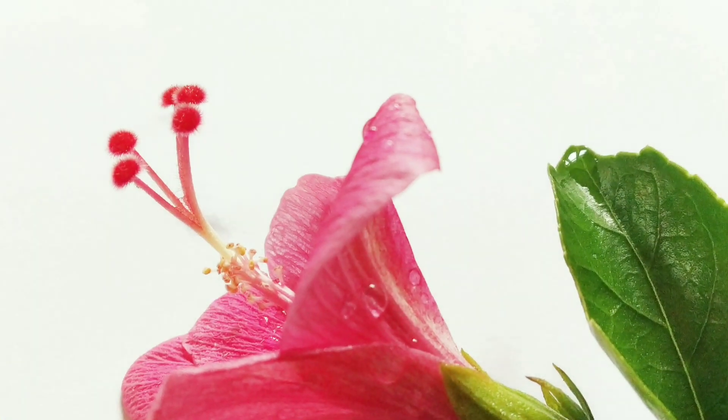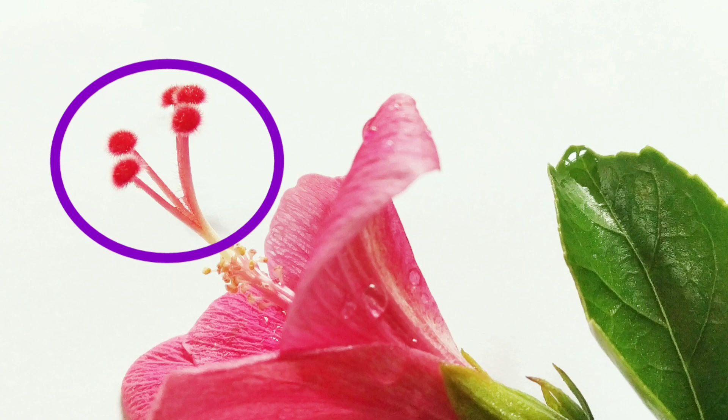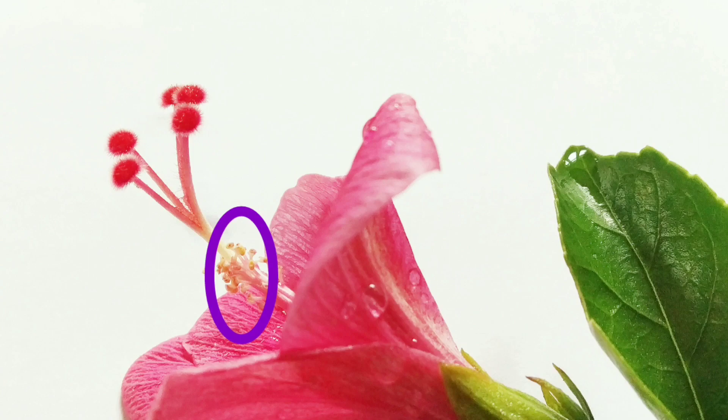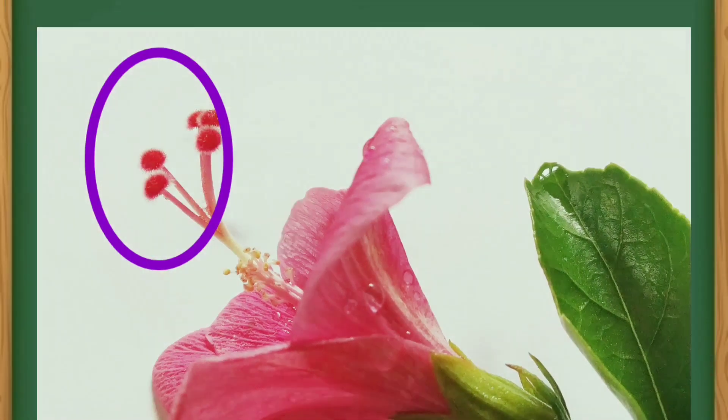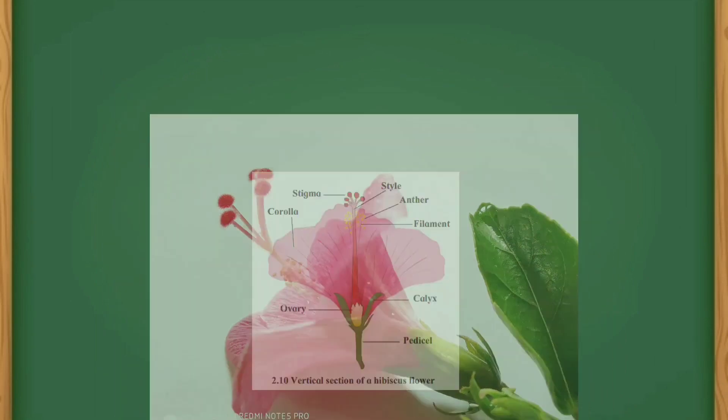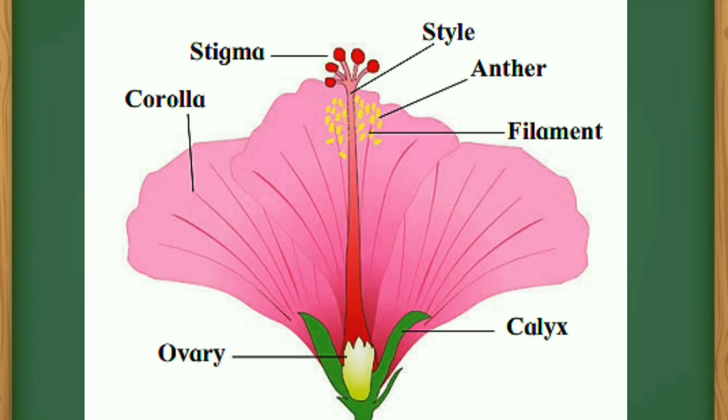See about the gynoecium. Gynoecium is the female reproductive part of the flower. Manches, ithe androecium haa phula cha plilingi bhag ahe, tar gynoecium haa phula cha strilingi bhag ahe. Gynoecium is made up of carpels. A carpel consists of stigma, style, and ovary.